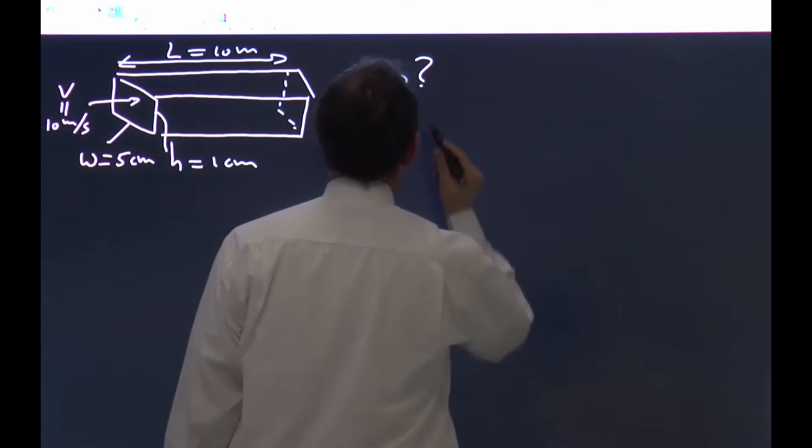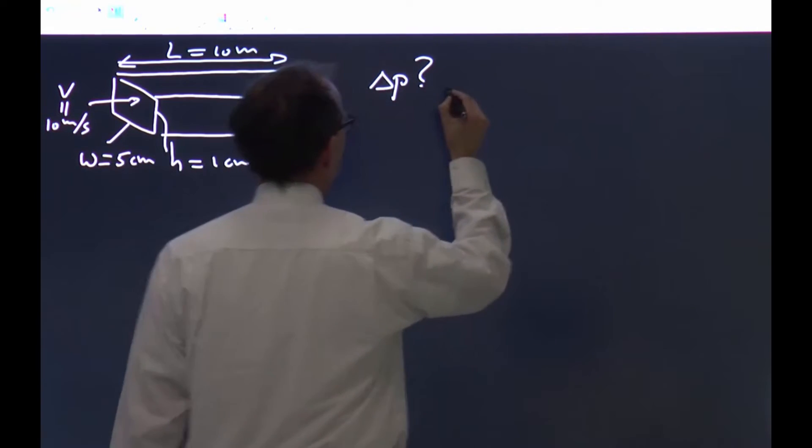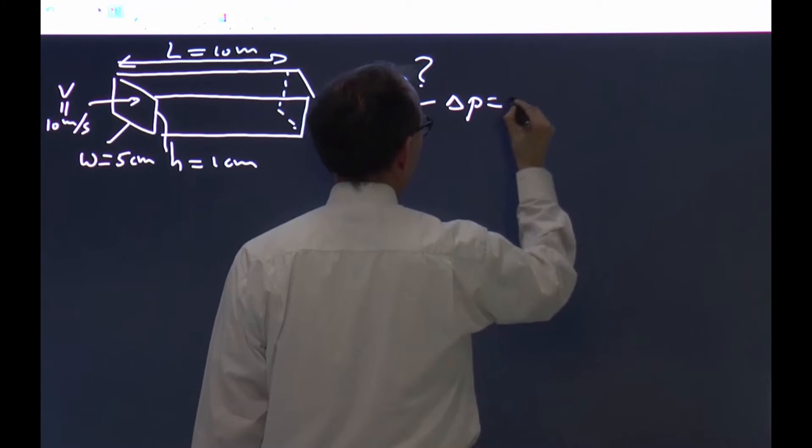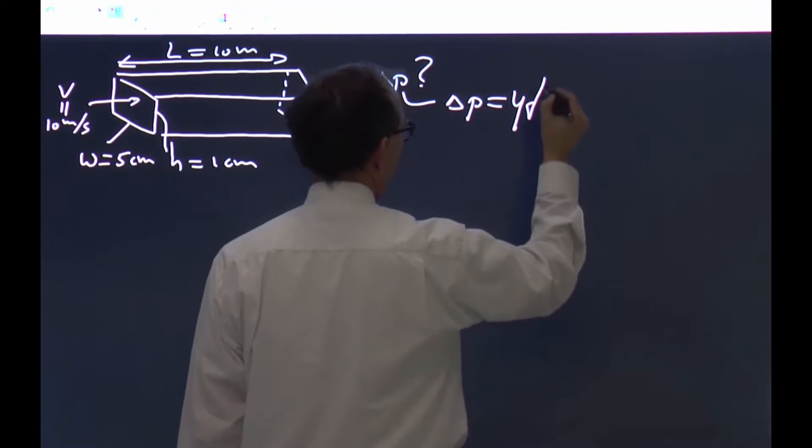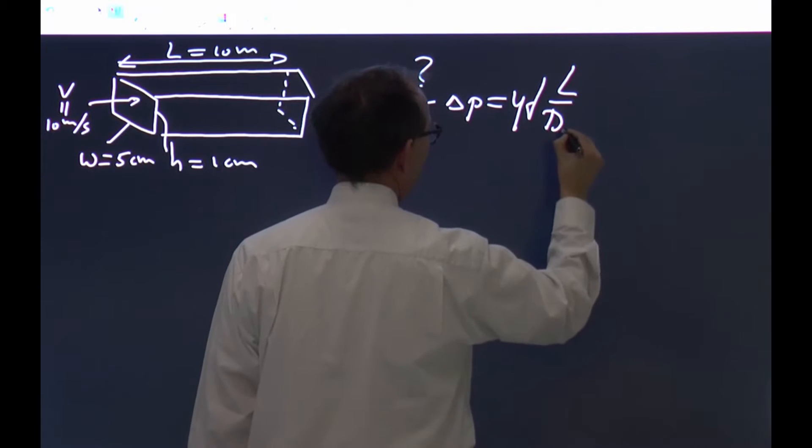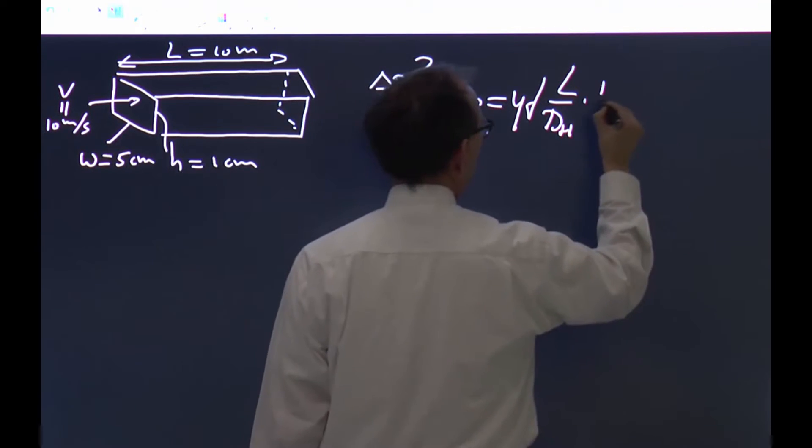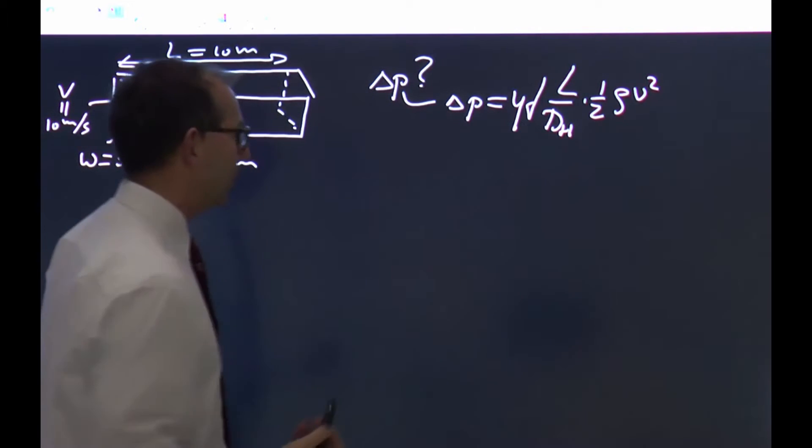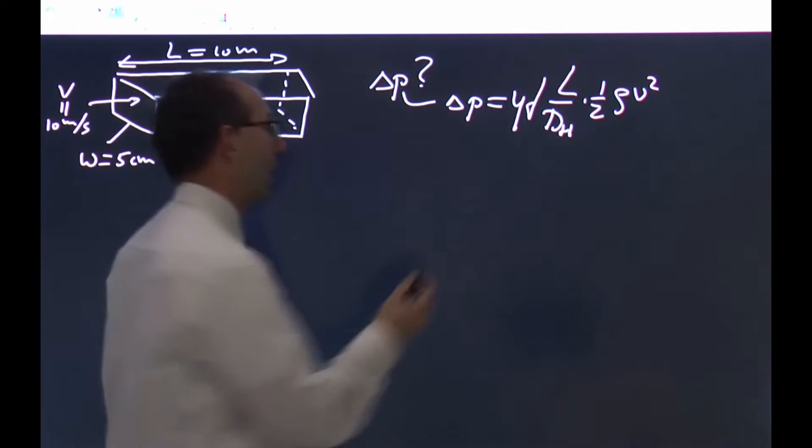Okay, from theory we learned how to do that. Delta p equals 4f, Fanning's friction factor, length over hydraulic diameter times half rho v squared. The point here is twofold. One, we need to find the hydraulic diameter.